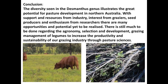In conclusion, I hope the diversity illustrated in the Desmanthus genus shows the great potential for pasture development in northern Australia. With support and resources from industry, interest from graziers, seed producers, and enthusiasm from researchers, there are many opportunities and potential yet to be realised. There is still much to be done regarding agronomy, selection and development, and grazing management of legumes to increase the productivity and sustainability of our grazing industry through these pasture sciences. Thank you.